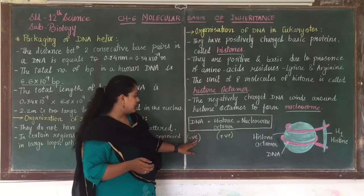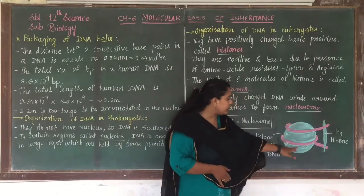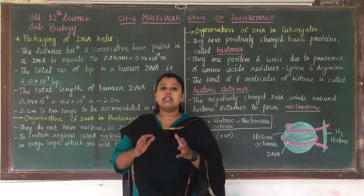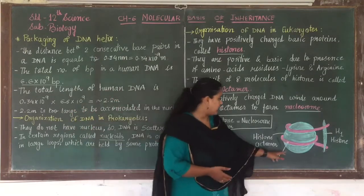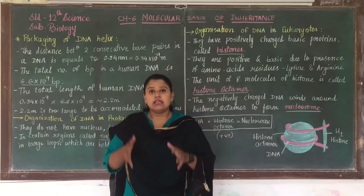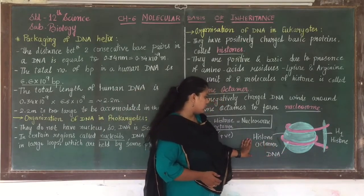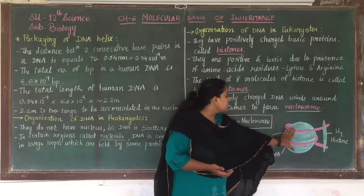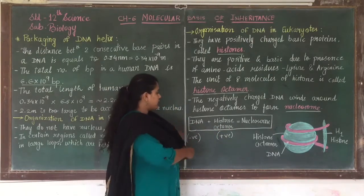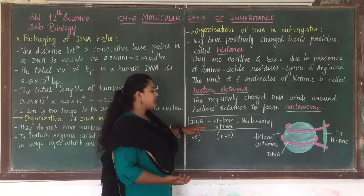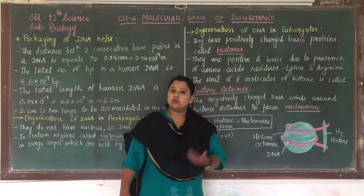Here, the negatively charged DNA plus the positively charged histone octamer — you can see the circular green shape, that is the histone octamer made of eight histone molecules combined. The thin strand showing the DNA is being wrapped around those histone molecules. When the negatively charged DNA wraps around the positively charged histone octamer, a nucleosome is formed.